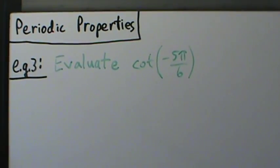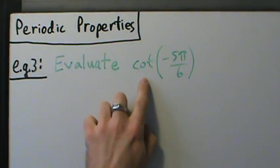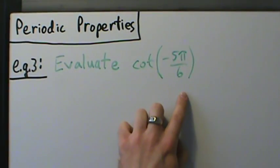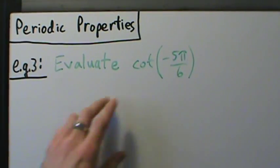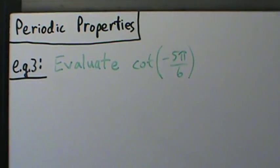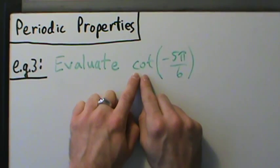Here's example 3 of using periodic properties to evaluate a trig function. We want to evaluate the cotangent of negative 5π over 6. In examples 1 and 2, we had sine and cosine where the period was 2π. Now, for cotangent, the period is π.